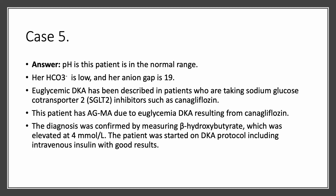This is what I suspected. I confirmed the diagnosis by measuring beta-hydroxybutyrate, and sure enough it was elevated at 4. These inhibitors of the sodium-glucose cotransporter can give you euglycemic DKA — diabetic ketoacidosis.